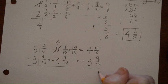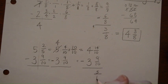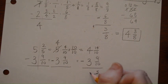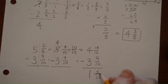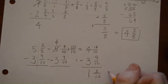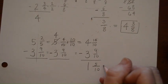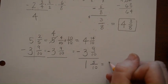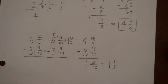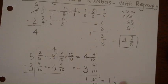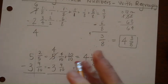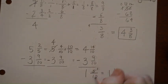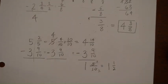I end up with 5 tenths, and then 1 for the whole numbers. Now let's see if I can simplify. Yes — 5 tenths simplifies because they both have a common factor of 5. So 5 divided by 5 is 1, and 10 divided by 5 is 2 — giving me 1 and 1 half.